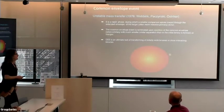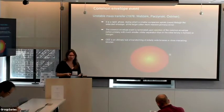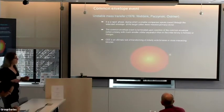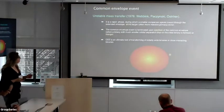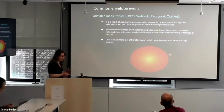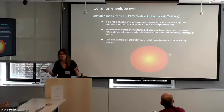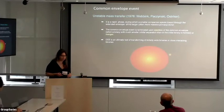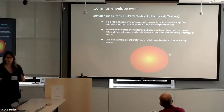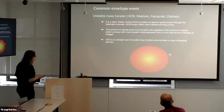Starting slowly with the history: we know that common envelope events are unstable mass transfer, inferred from observations of close binaries many, many years ago. We know it's a rapid phase during which a smaller companion spirals in, assumed to terminate with either ejection of the common envelope or a merger. It's a very good tool to transform initially wide binaries into close binaries.